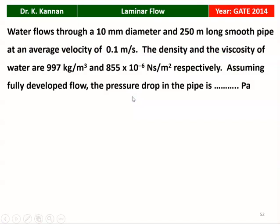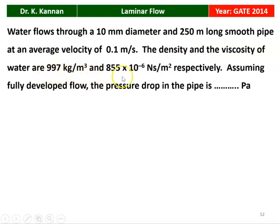The first question is from the GATE 2014 question paper. Water flows through a 10 millimeter diameter and 250 millimeter long smooth pipe at an average velocity of 0.1 meters per second. The density and viscosity of water are 997 kilogram per meter cube and 855 × 10⁻⁶ Newton second per meter square respectively. Assuming fully developed flow, the pressure drop in the pipe is __ Pascal.